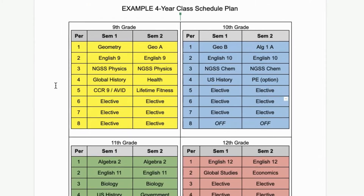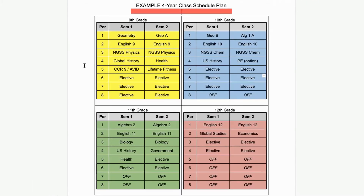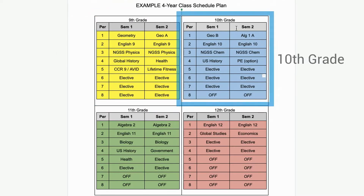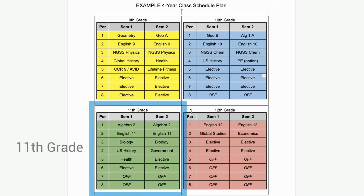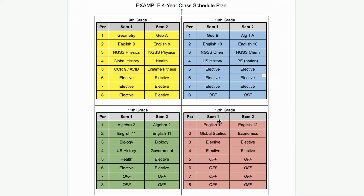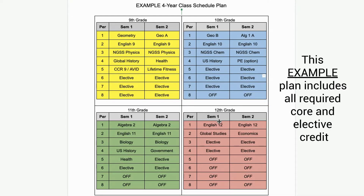This is going to be a good visual for you to understand and I'll give you some examples — hopefully it will open a few eyes. Here's the example four-year class schedule plan. Please take a look at all four colored areas: the yellow area is an example ninth grade schedule, blue is tenth grade, green is eleventh grade, and red is twelfth grade. Disclaimer — this is an example plan, not how every student will look, but it includes all required core credits and elective credits that counselors ensure students have before graduation.